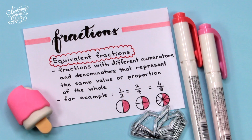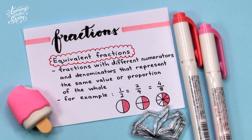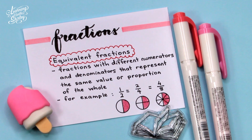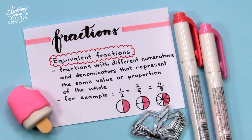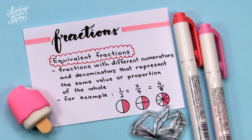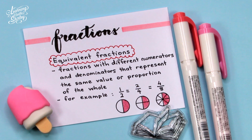Equivalent fractions are fractions with different numerators and denominators that represent the same value or proportion of the whole. For example, 1 over 2 is equal to 2 over 4, which is equal to 4 over 8. Therefore, 1 over 2, 2 over 4, and 4 over 8 are equivalent fractions.